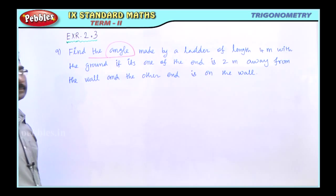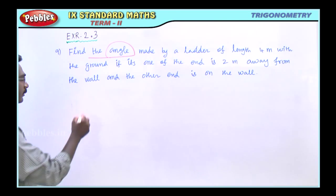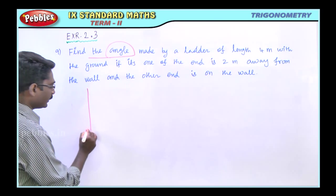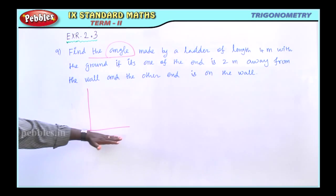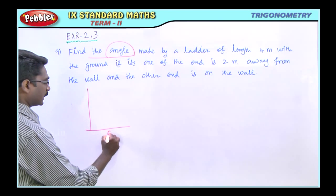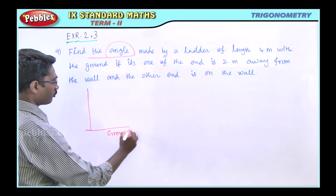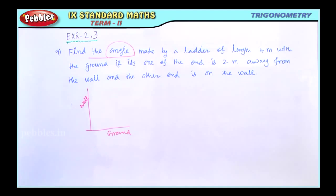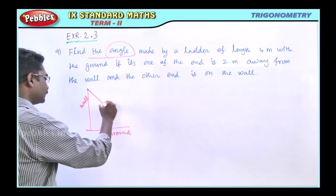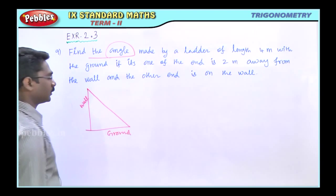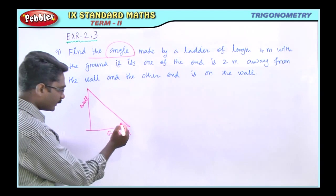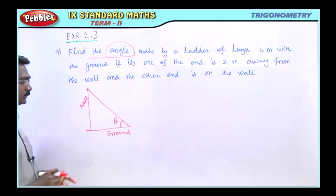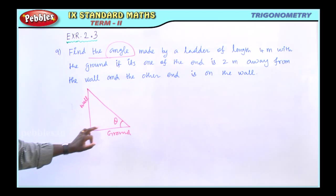What is the angle? Let's draw the diagram. We first draw a line for the wall. This is the ground, and this is the wall. We have a ladder leaning against the wall. The angle theta is at the ground between the ladder and the ground.